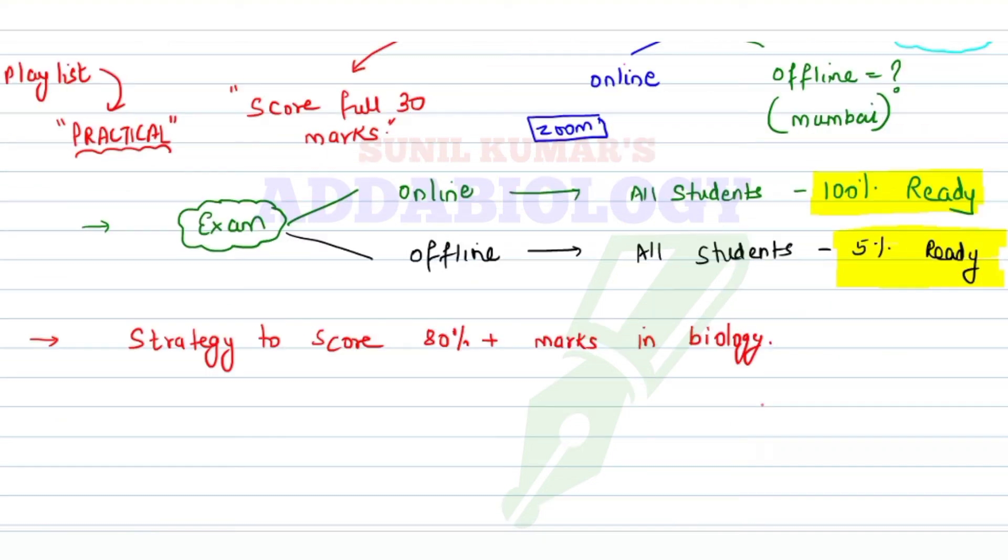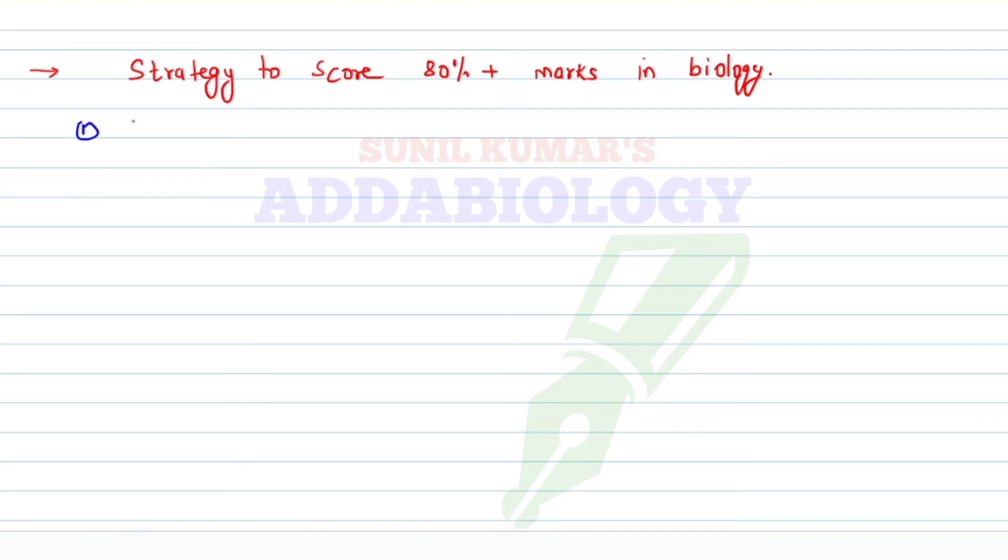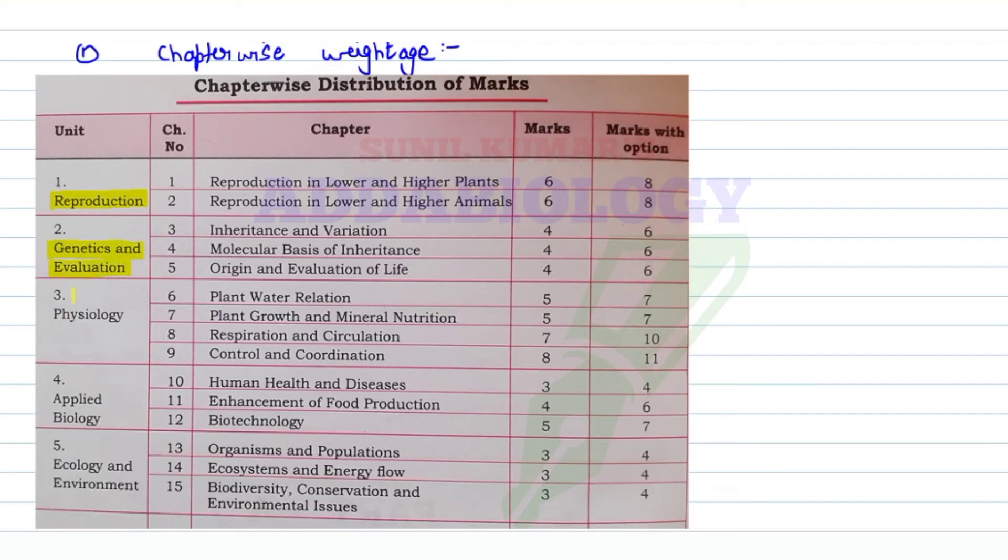First, let's understand the chapter-wise weightage. 25% of the portion has been deleted, so you have different units like reproduction, excretion, osmoregulation, physiology, applied biology, ecology and environment. The very first unit you're going to do without missing a single line is chapter 1 and 2 - reproduction in lower and higher plants, and reproduction in lower and higher animals.